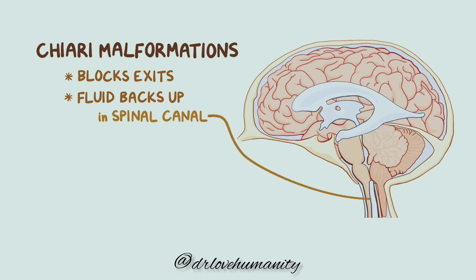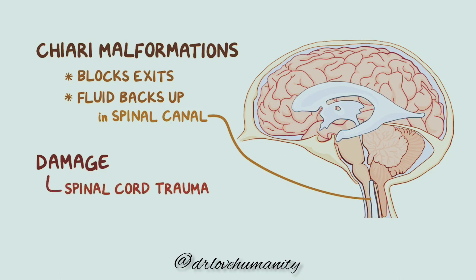Aside from Chiari malformations, syringomyelia can also be caused by any acquired condition that blocks the flow of cerebrospinal fluid, like a tumor. Alternatively, it can be caused by damage to the spinal cord, which results in an enlarged spinal canal. Examples of that include spinal cord trauma, spinal tumors, and spinal cord abscess.